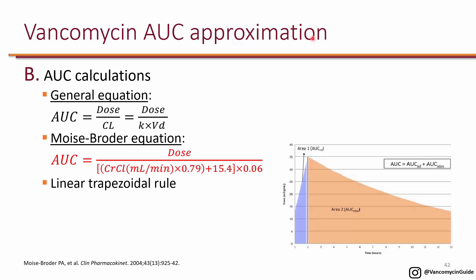So what else can we do to estimate AUC if trough is not a good surrogate? One approach is to use the general equation AUC equals dose divided by clearance. If you have two levels and you've calculated the patient's clearance, you can get the AUC directly. Empirically, when starting the dose without levels yet, you can use population kinetics. There is the Moyes-Broder equation, derived from a patient population, that can estimate the AUC empirically. If you want an AUC of 400 and you know the patient's creatinine clearance, you solve for dose to get the empiric dose.